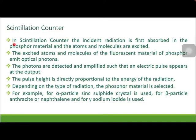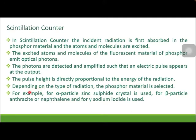In the scintillation counter, the incident radiation is first absorbed in the phosphor material and the atoms and molecules are excited. The excited atoms and molecules of the fluorescent material of phosphor emit optical photons. The photons are detected and amplified such that an electric pulse appears at the output. The pulse height is directly proportional to the energy of the radiation, so in this you can find out the energy also.